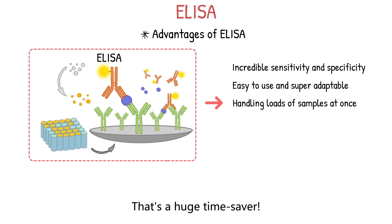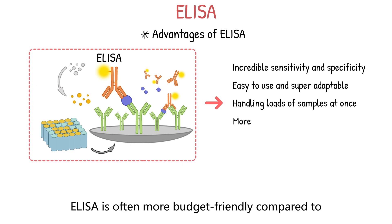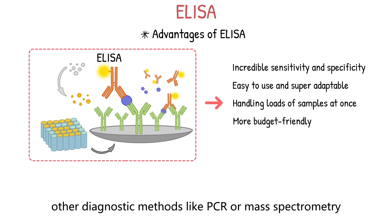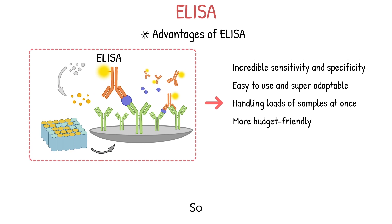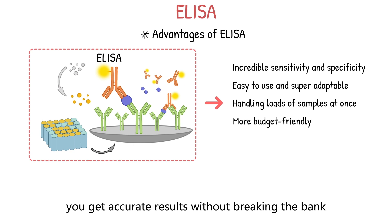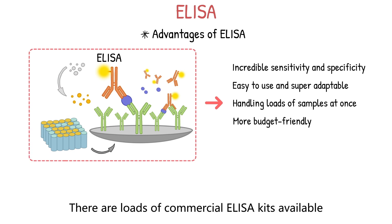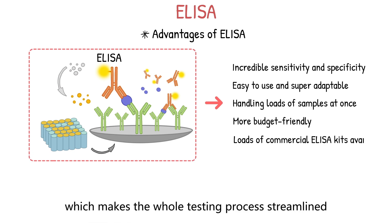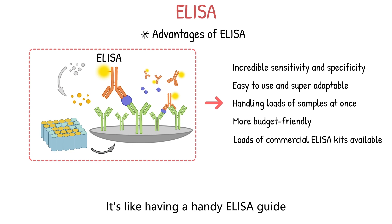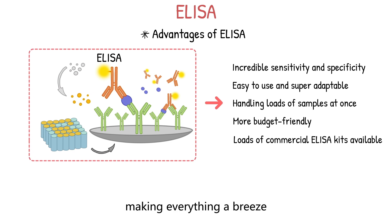When it comes to cost, ELISA is often more budget-friendly compared to other diagnostic methods such as PCR or mass spectrometry, so you can get accurate results without breaking the bank. There are also many commercial ELISA kits available, which makes the whole testing process streamlined and standardized, making everything straightforward.